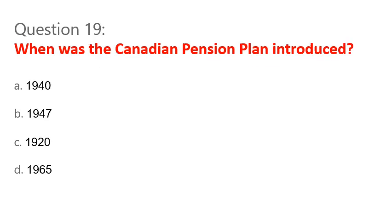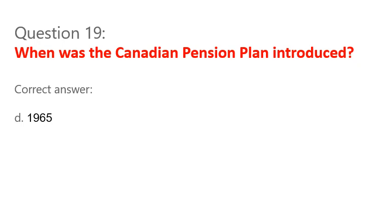Question 19. When was the Canadian pension plan introduced? A. 1940. B. 1947. C. 1920. D. 1965. Correct answer: D. 1965.